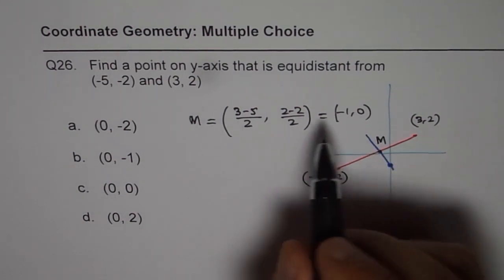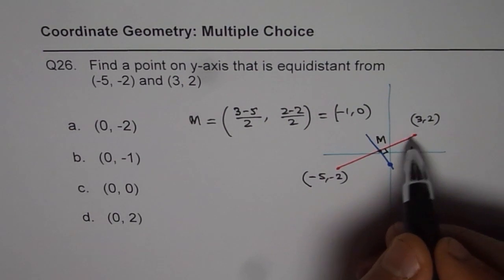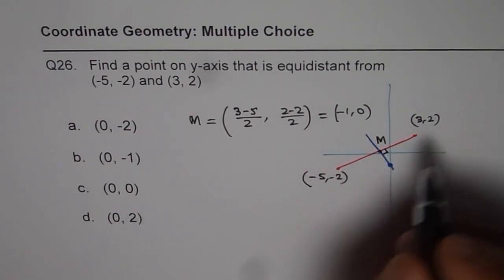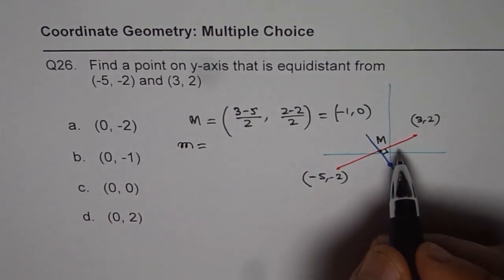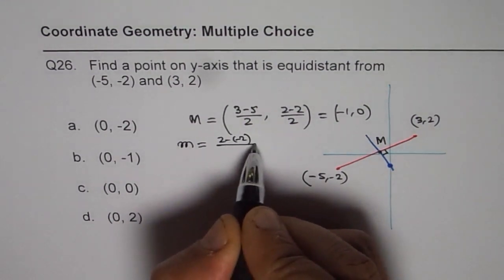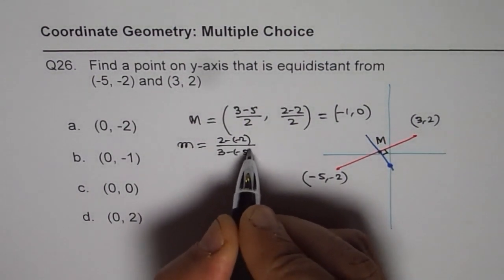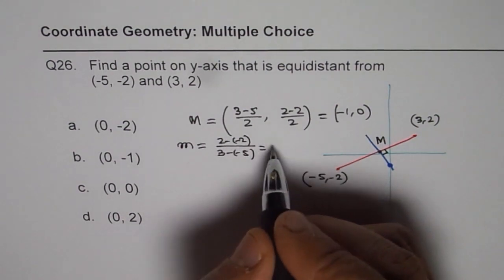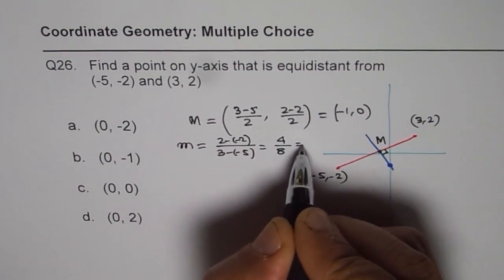Now the right bisector will be perpendicular to this line segment. So what is the slope of this line segment? Slope of the line segment is (y2 - y1)/(x2 - x1), that is (2 - (-2))/(3 - (-5)), which gives us 4/8, or 1/2.